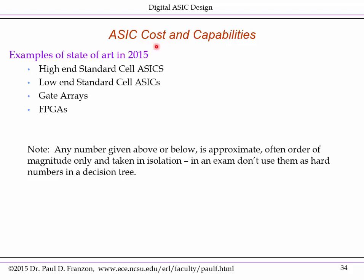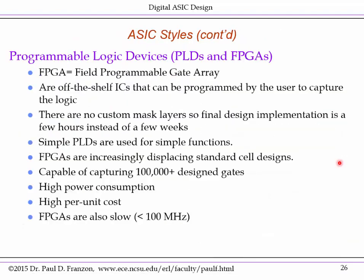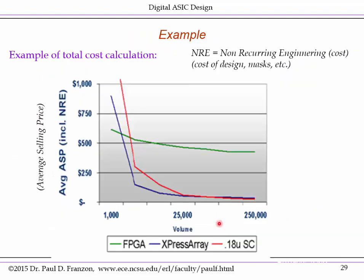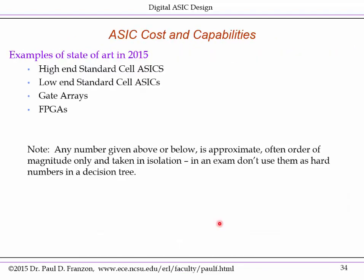Part of the reason I added this is because I often see students using the charts you've just reviewed as a hard-numbered decision tree. These are not hard numbers. For example, on this slide I mention FPGAs are slow and say less than 100 MHz. Notice all my numbers here are order-of-magnitude sorts of numbers. These are not hard and fast numbers. I want you to use your engineering judgement in the types of exam questions about what type of implementation is best suited to an application.